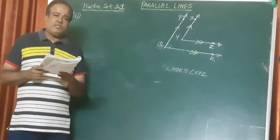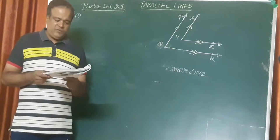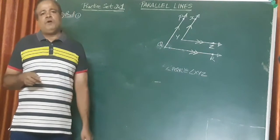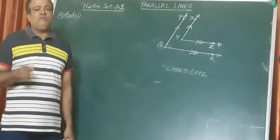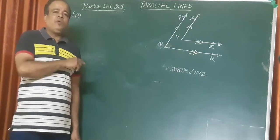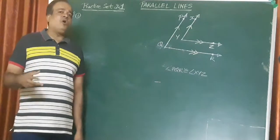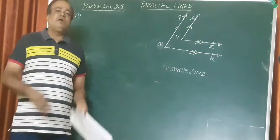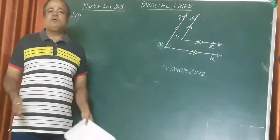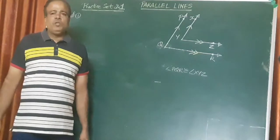So, practice set, Standard 9 geometry, page number 17, Practice Set 2.1, fourth sum. We saw how to solve one method and as I told you I will teach you one more method. Try doing the first method — that is more easier — but I will teach you one more way just to show how flexible geometry is. You can solve these geometry sums by various methods; there are many ways of doing these sums.